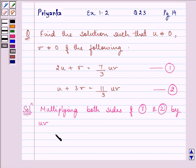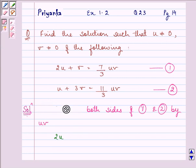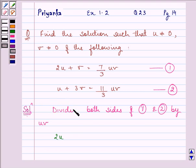On doing it, we have 2u that is not multiplying but dividing so that we can get rid of the uv which is given in the RHS. So on doing it, we have 2u divided by uv plus v divided by uv is equal to 7 by 3 uv divided by uv.